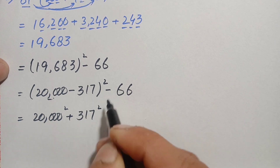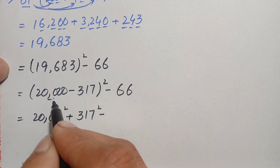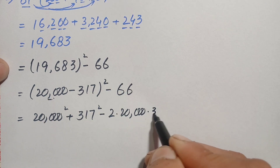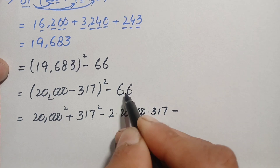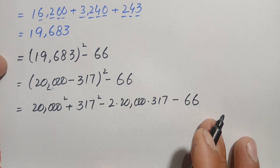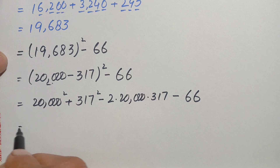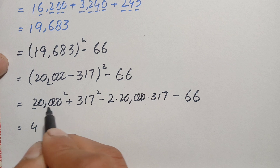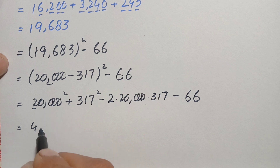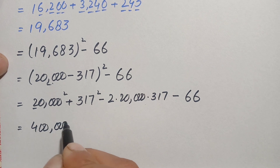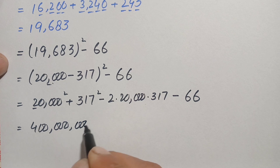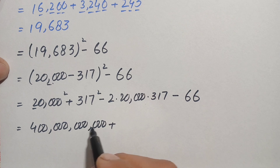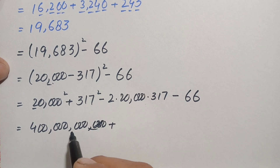Here we use the algebraic identity (a minus b)² equals a² plus b² minus 2ab. So this becomes 20,000² plus 317² minus 2 times 20,000 times 317, minus 66. The square of 20,000: 2 squared is 4 and there are four zeros doubled to eight zeros, giving 400,000,000.